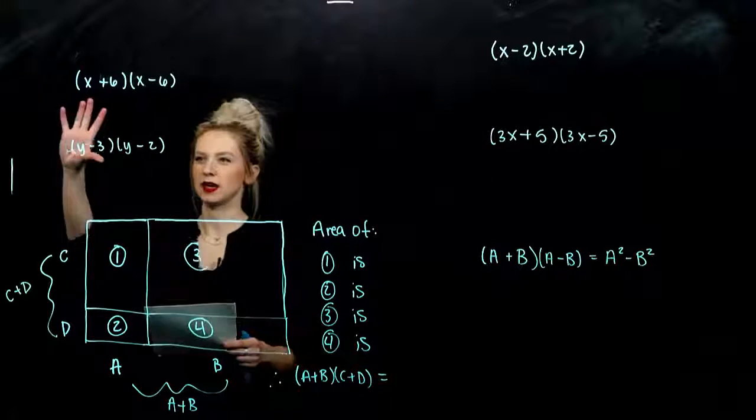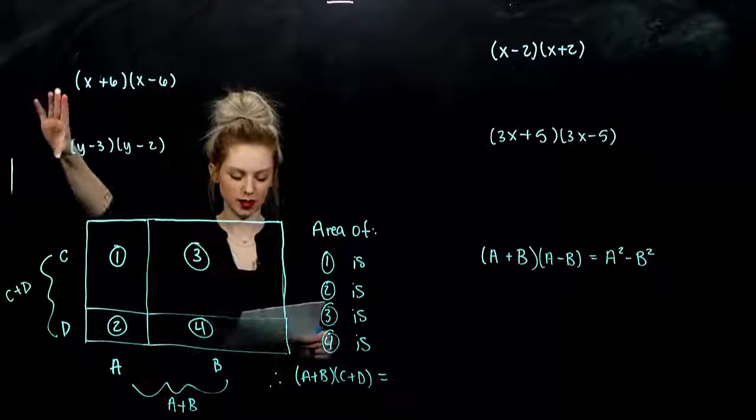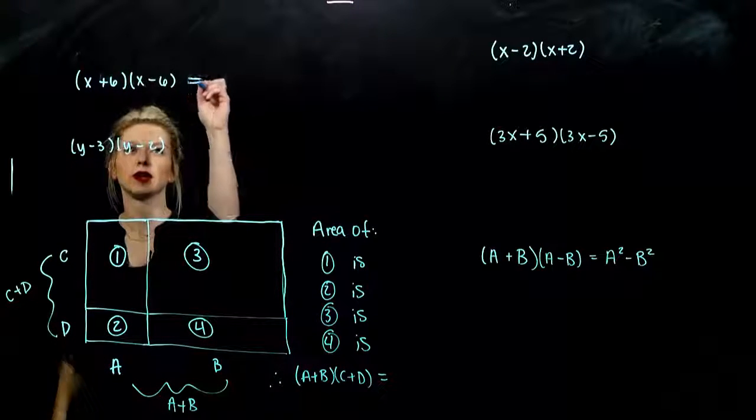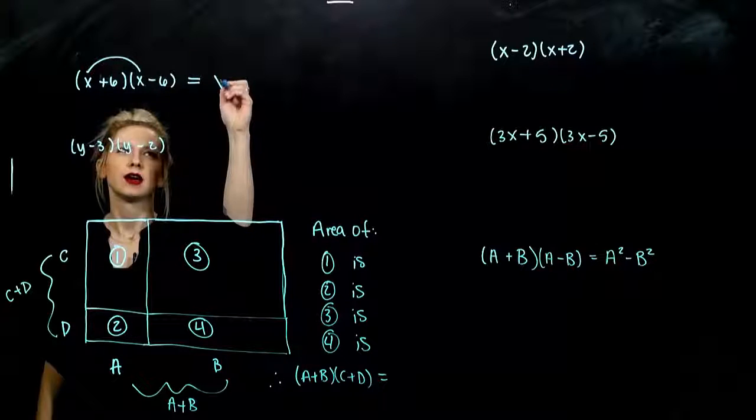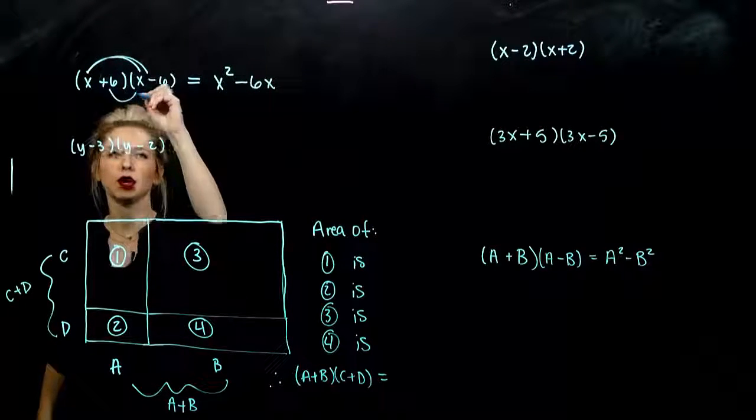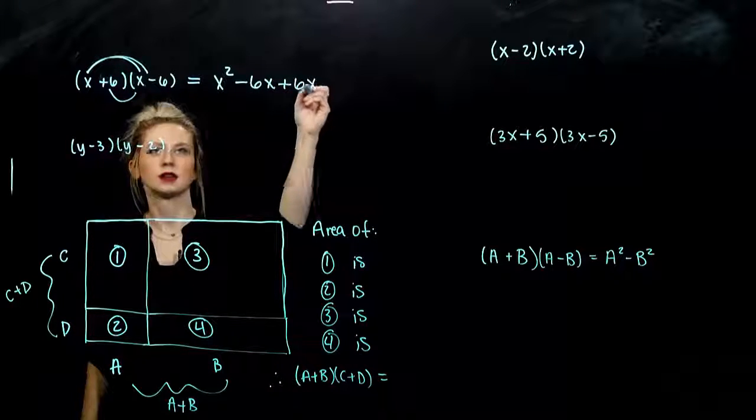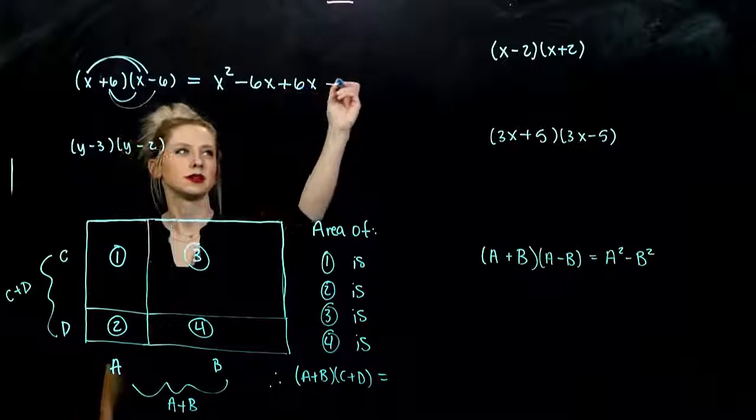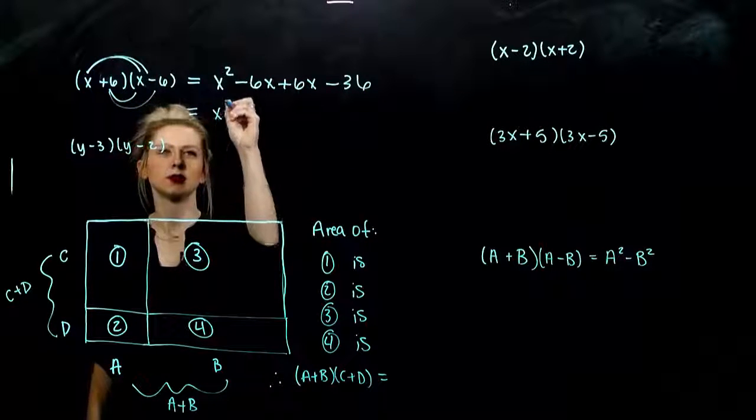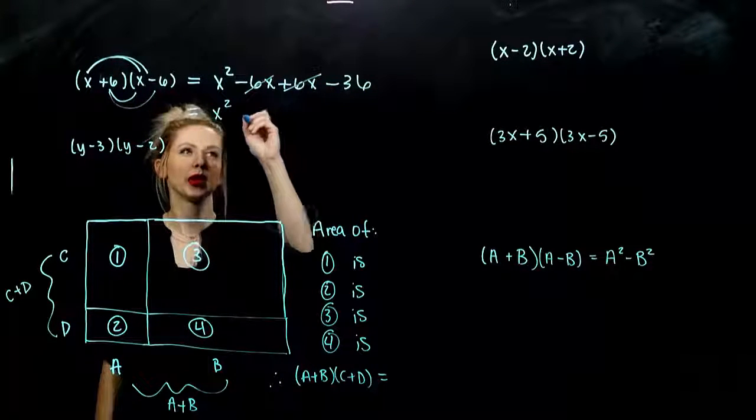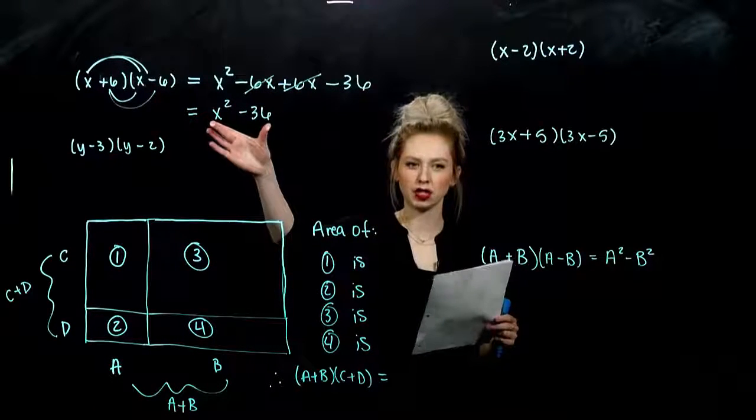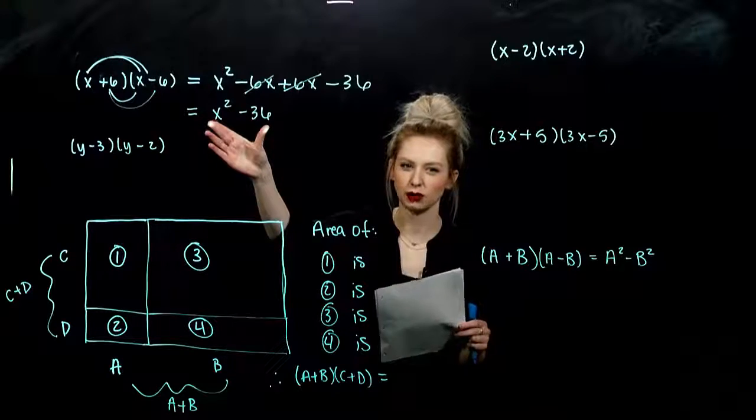So take these first two examples and multiply them out. Foil them out, see what you get. From the first: First, x squared. Outer, negative 6x. Inner, plus 6x. And then the last, minus 36. So when you simplified, the middle two terms were gone. The positive and the negative, they canceled out. And we were left just with this binomial, a two-term polynomial.